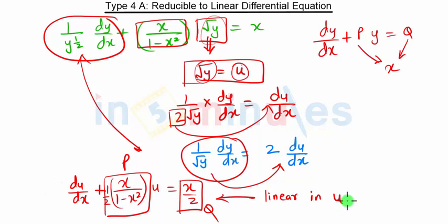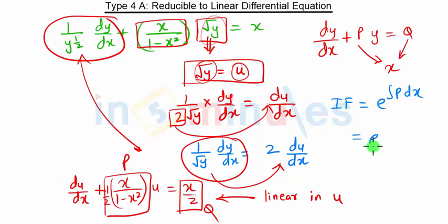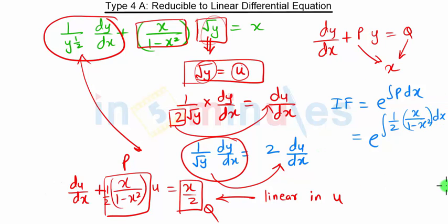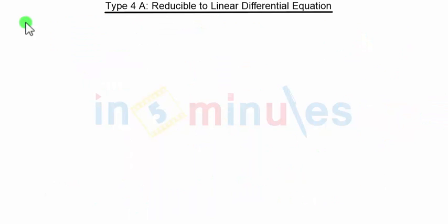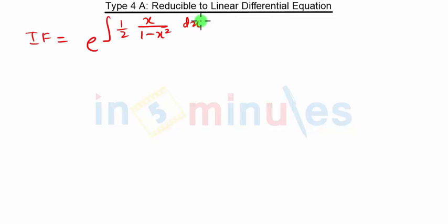The integrating factor is given by e^(∫p dx). Here p is x/(2(1 − x²)), so the integrating factor is e^(∫x/(2(1 − x²)) dx). This integrating factor requires some work, so let us first consider this integration separately.